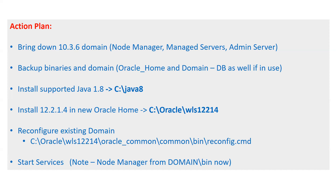First, you have to install your supported Java. In my case, I have installed Java 8 on Windows in directory C:\Java8. After that, I have installed 12.2.1.4 in our new Oracle home, which is C:\Oracle\WLS12214. And I will reconfigure my existing domain — as I said, the only thing that will remain the same is the domain. Once the reconfiguration is done, I will start the services: node manager, your admin server, and your managed server.